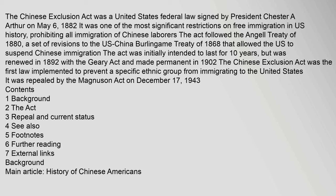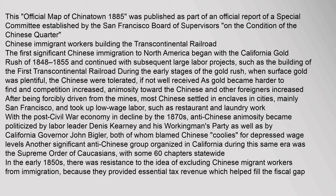The first significant Chinese immigration to North America began with the California Gold Rush of 1848–1855 and continued with subsequent large labor projects, such as the building of the first Transcontinental Railroad. During the early stages of the Gold Rush, when surface gold was plentiful, the Chinese were tolerated, if not well received. As gold became harder to find and competition increased, animosity toward the Chinese and other foreigners increased, and they were forcibly driven from the mines.